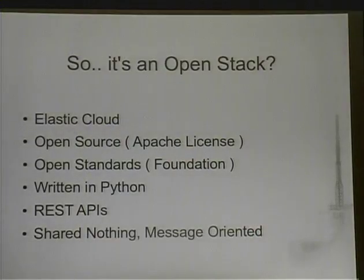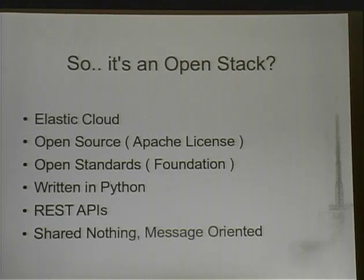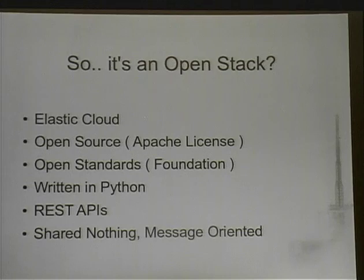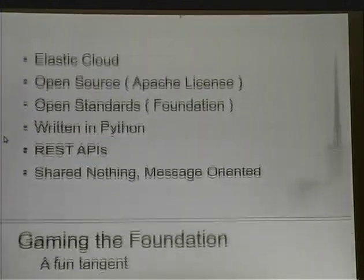OpenStack is an elastic cloud, very similar to Amazon. It was originally developed with an EC2 API but has its own API now. It's Apache licensed, and because it was Apache licensed, CloudStack was forced to open source theirs under an Apache license as well — so you can thank Uncle Sam for making two of these projects open source. There's an open standards component, it's written in Python, REST APIs are pretty much everywhere, and shared-nothing message-oriented architecture throughout.